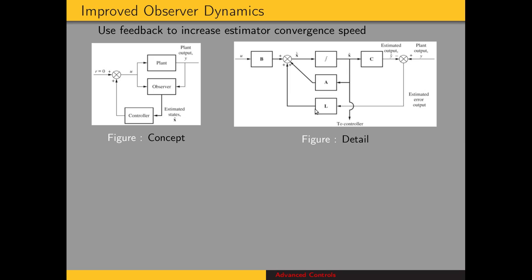In order to effect this change, we're going to use the output from the plant as an input to our observer, and feed that back so that we can have a faster response. Conceptually, we have the observer taking the same input as the plant, just like in the previous configuration, but now we also have the plant output as an input to the observer. And we come up with the state estimates that are used by the controller.